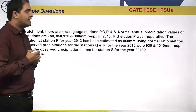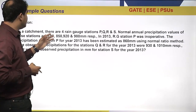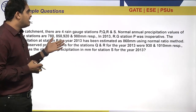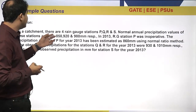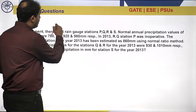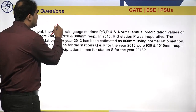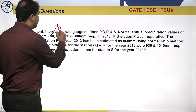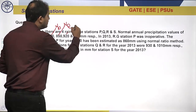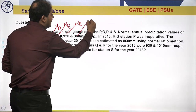This is a previous guide question. In it, there are four rain gauge stations P, Q, R, and S in a catchment. The normal annual precipitation values of these stations are: NP = 780, NQ = 850, NR = 920, and NS = 980.